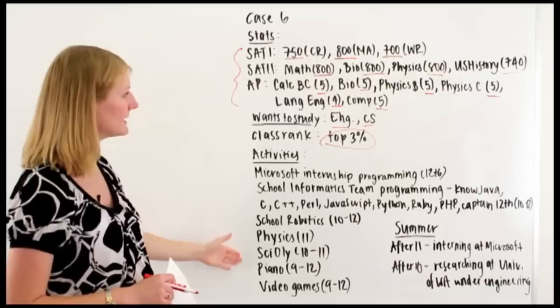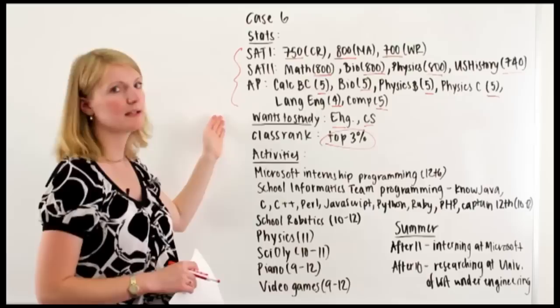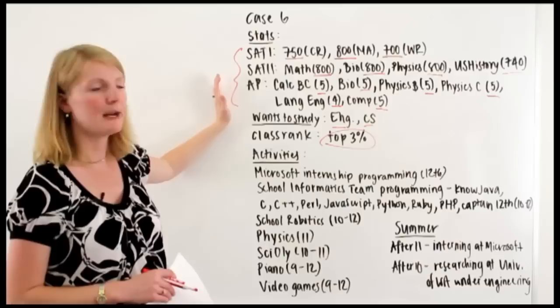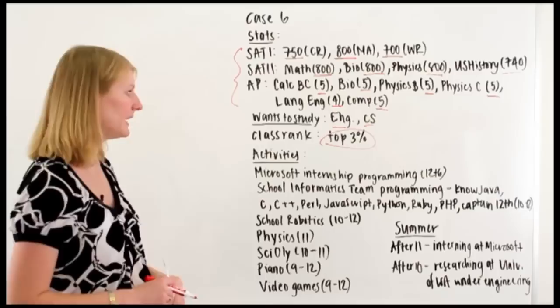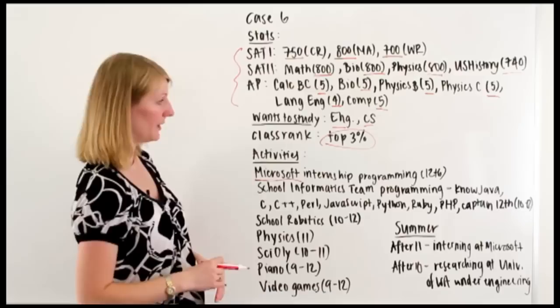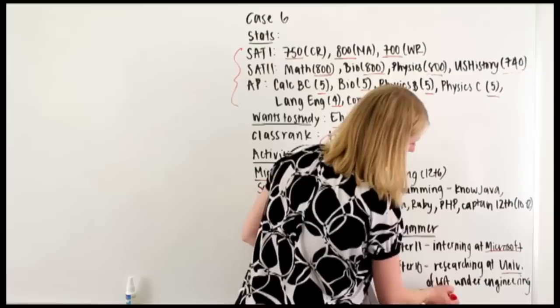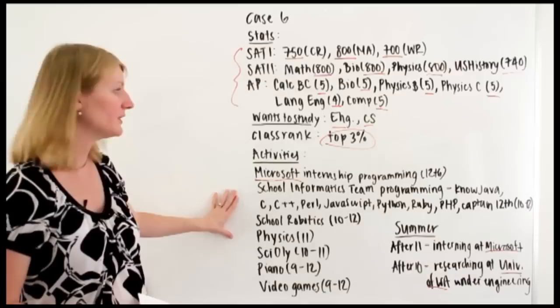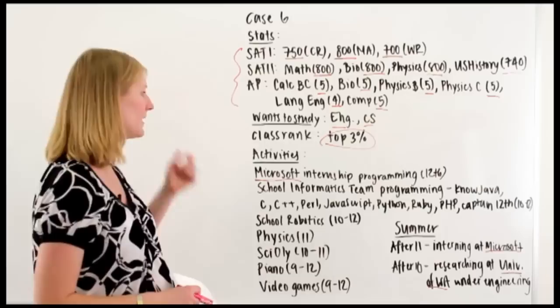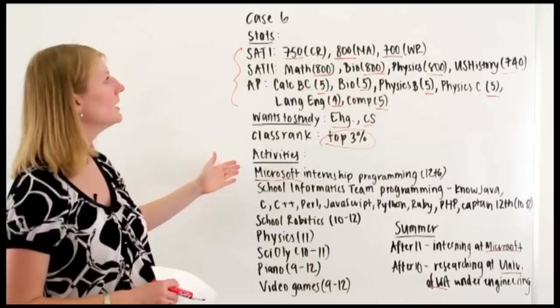Let's take a look at his activities to see if there's something compelling in this application. He's definitely passed the competitive bar. And so now students won't be admitted just because they're competitive. They'll be admitted because they also have something really compelling in their application. So he did an internship at Microsoft on programming in 12th. So that's noteworthy. I noticed from his summer activities, he's interned at Microsoft and is researching at the University of Washington. So I believe this student is coming from Washington State. So it means that this is in his backyard. This is something that he can take advantage of. And it's good to see that he's taking advantage of it. And he's specifically focusing on the things that are interesting to him, this engineering and CS kind of background.